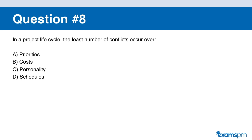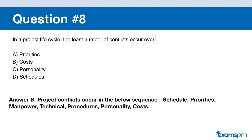Question number eight. In a project life cycle, the least number of conflicts occur over: A: priorities. B: cost. C: personalities. D: schedules. If you said B, you are correct. Project conflicts occur in this sequence: schedule is number one, then priorities, manpower, technical, procedures, personality, and then cost — meaning cost generates the fewest conflicts.